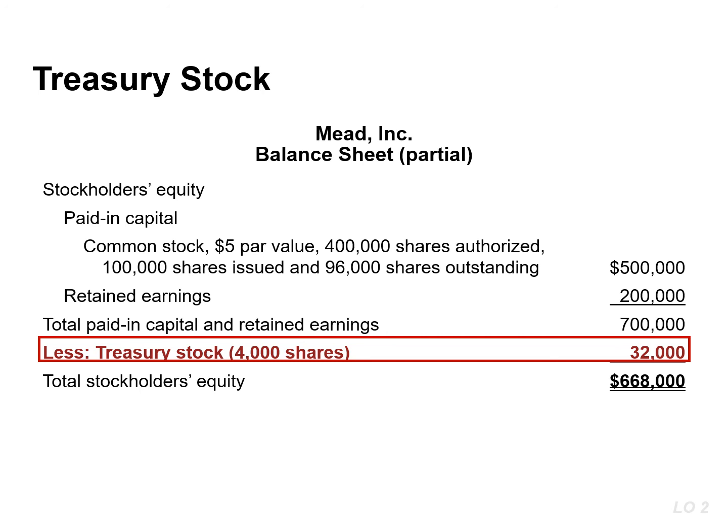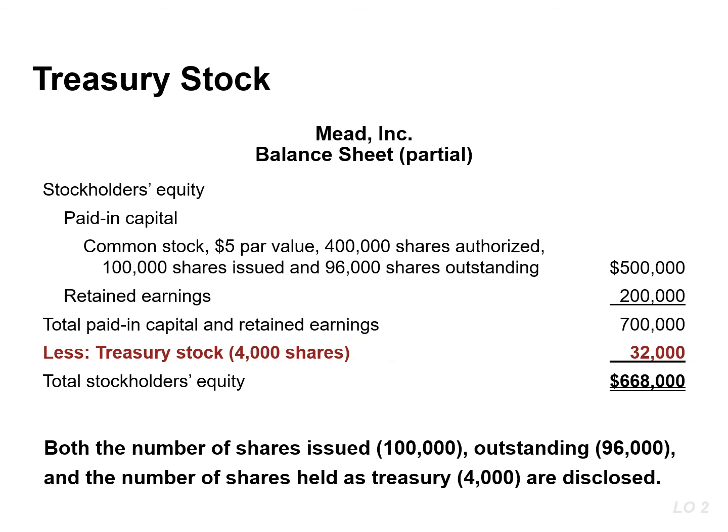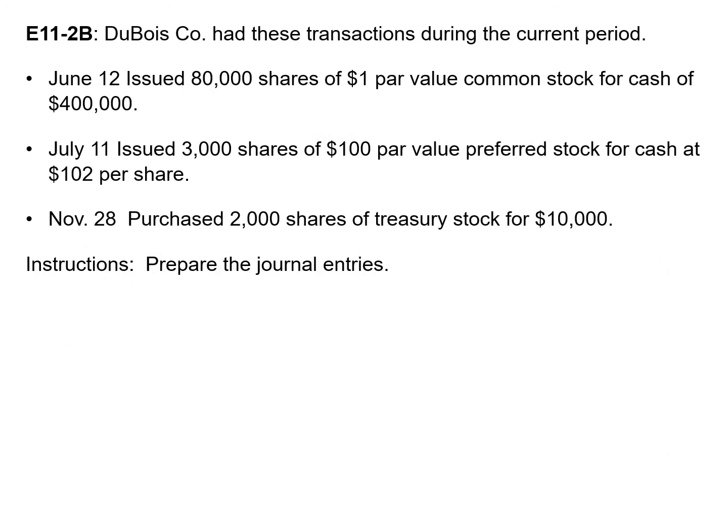The presence of treasury shares causes a difference between the number of shares issued and the number of shares outstanding. The balance sheet discloses the number of shares issued — in this example, 100,000 — as well as the number held in treasury, which is 4,000 shares. The difference between these two numbers represents the outstanding shares, or 96,000. Outstanding shares refers to the total number of issued shares currently being held by stockholders. This is a good exercise to practice recording common and preferred stock, as well as treasury stock. The solutions to this exercise will be provided in another document.